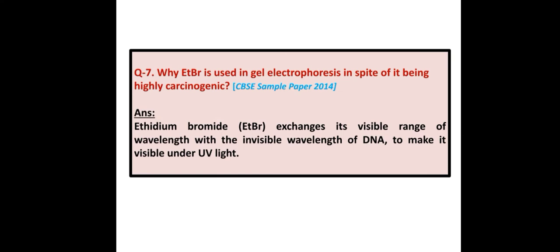Why is EtBr (ethidium bromide) used in gel electrophoresis in spite of it being highly carcinogenic? Answer: Ethidium bromide intercalates with DNA and fluoresces, exchanging its visible range wavelength with the otherwise invisible wavelength of DNA to make it visible under UV light.